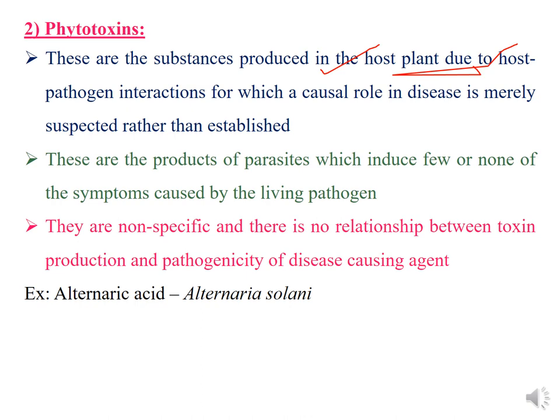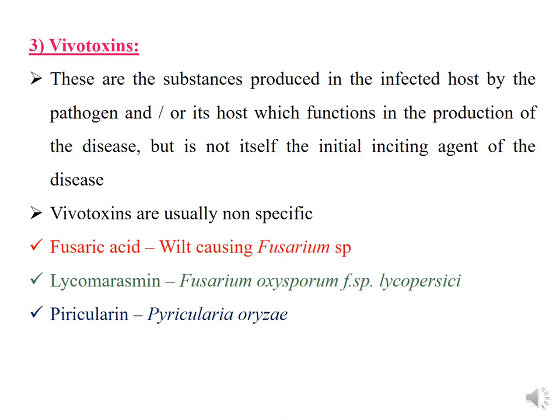An example of a phytotoxin is alternaric acid, produced by Alternaria. Coming to the third category: vivotoxins. Vivotoxins are substances produced in the infected host by either the pathogen or the host, which function in the production of disease. They play a minor role in disease development, but the toxin itself is not the initial inciting agent. Examples are fusaric acid produced by Fusarium species, which causes wilt disease; lycomarasmin in tomato, produced by Fusarium oxysporum f. sp. lycopersici; and pyricularin produced by Pyricularia oryzae in paddy plants.